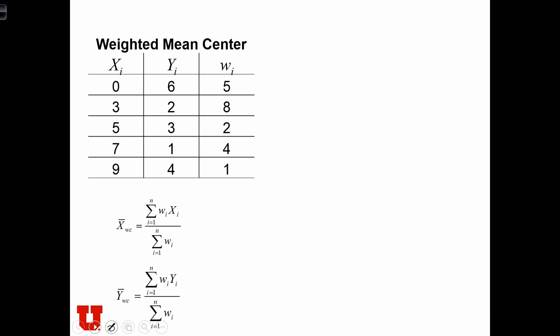Let's calculate the weighted mean center. The first step is to calculate weighted x and weighted y. So weighted x is simply the x times the weight. So we've got 0, 24, 10, 28, and 9.